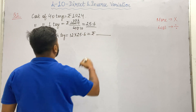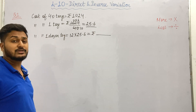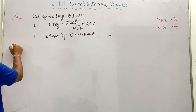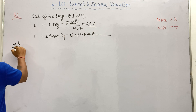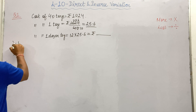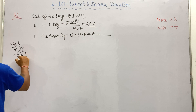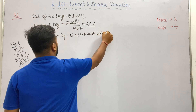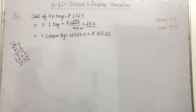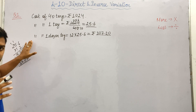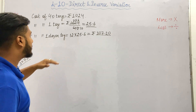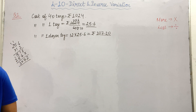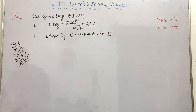So the cost of 1 toy comes out to Rs. 25.6. Now multiply this by 12 to get the cost of 1 dozen. So 25.6 × 12 = 307.20. So the answer is Rs. 307.20 — that is the cost of 1 dozen toys. This was question number 1. Pause the video and note it down. Then I'll come to question number 3. Odd-numbered questions we will do together; even-numbered ones you try on your own.